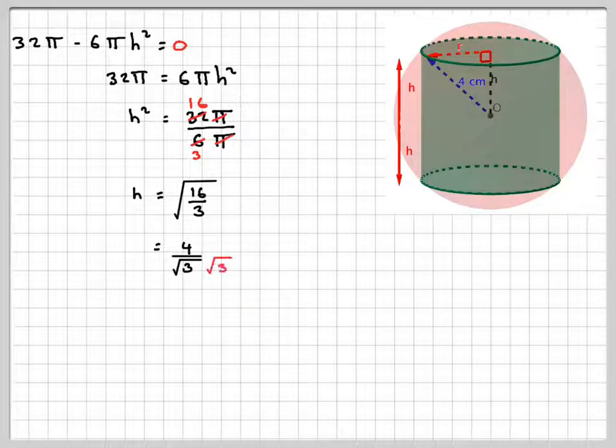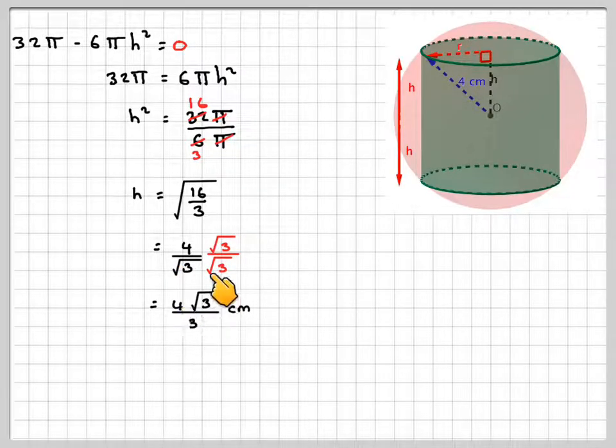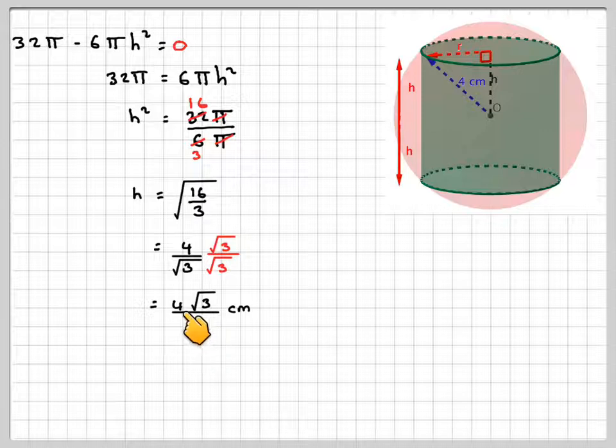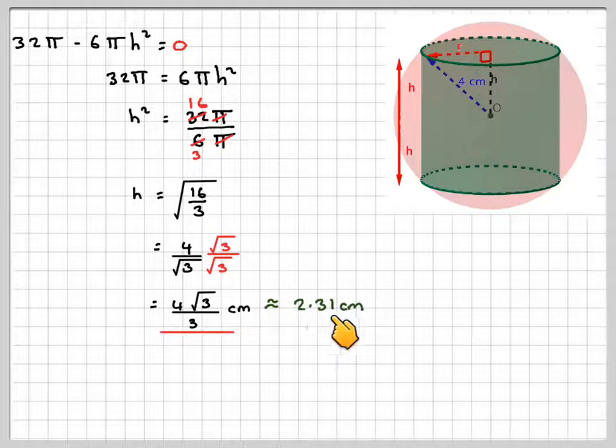Normally, we would rationalise that. So that would be root 3 times root 3, multiplying. So using another part of the course, we've got 4 root 3. Root 3 times root 3 is 3 centimeters, and that's approximately equal to 2.31 centimeters.